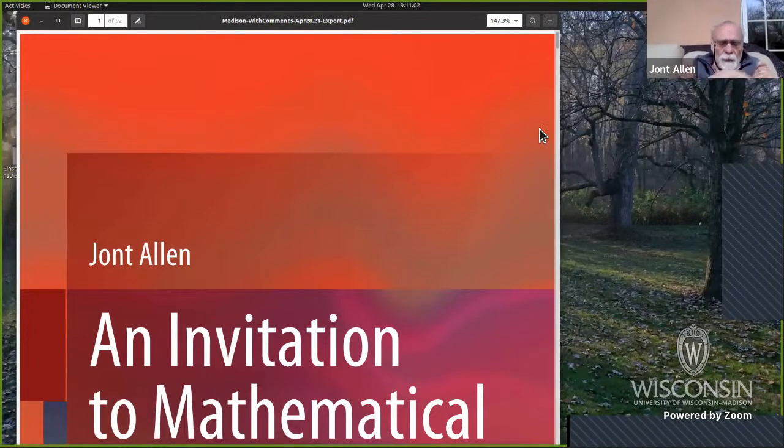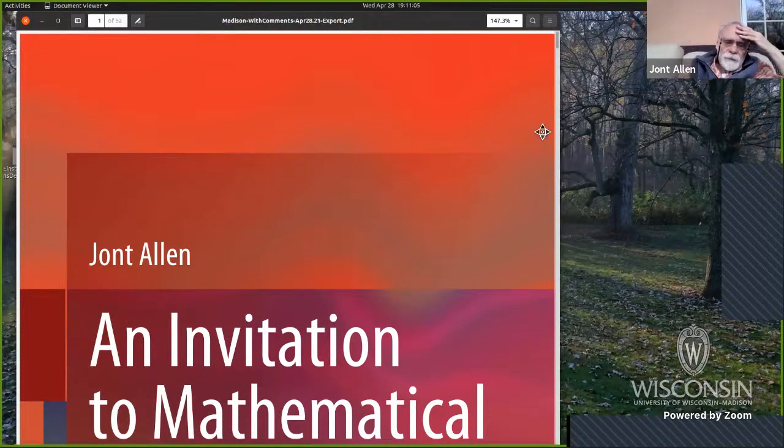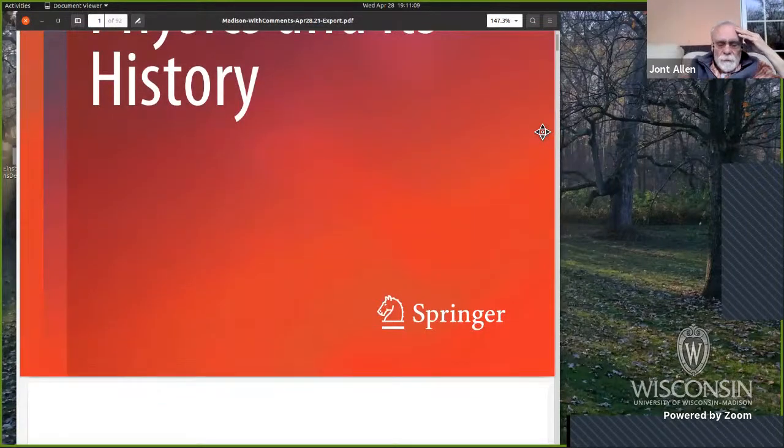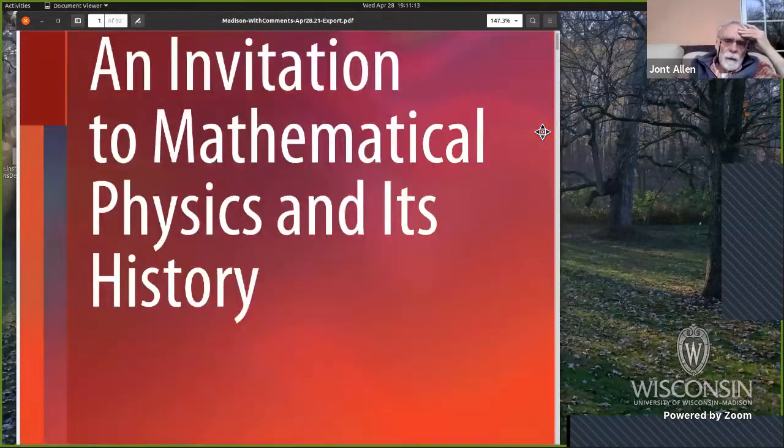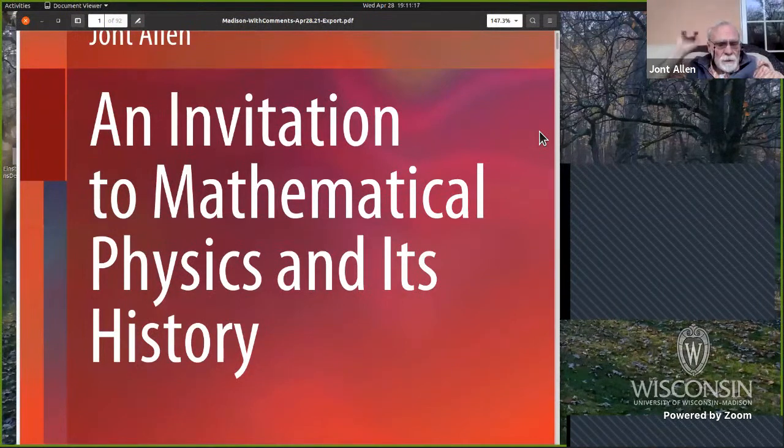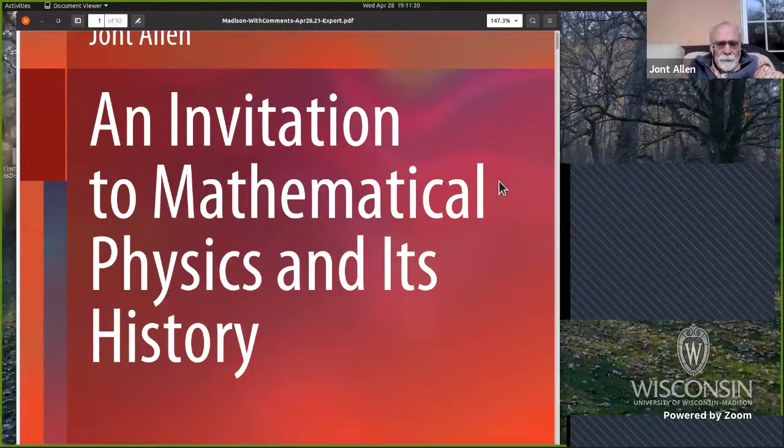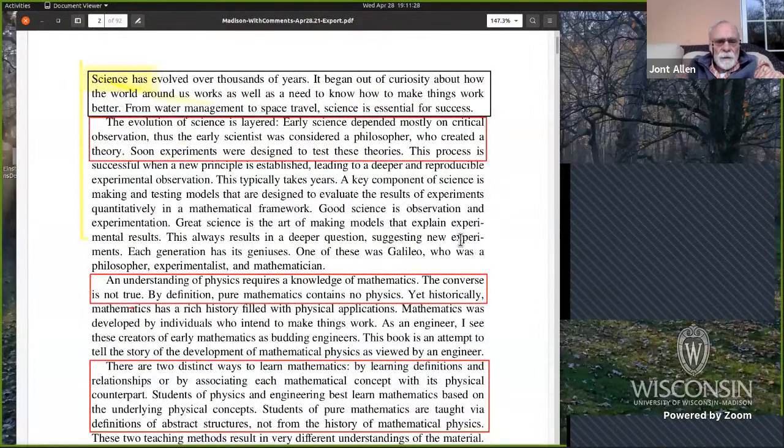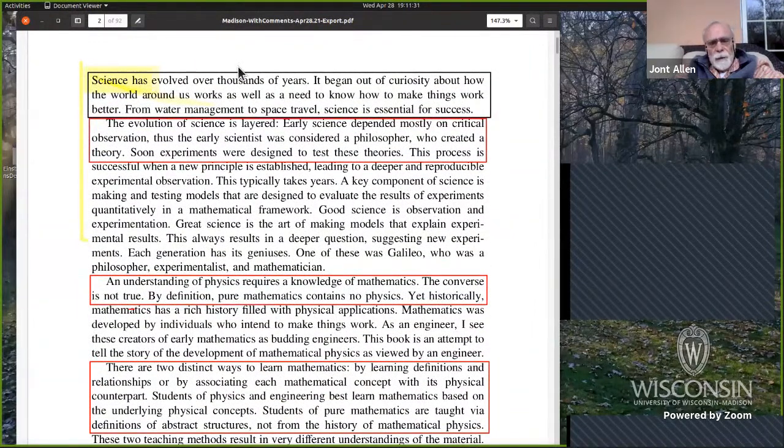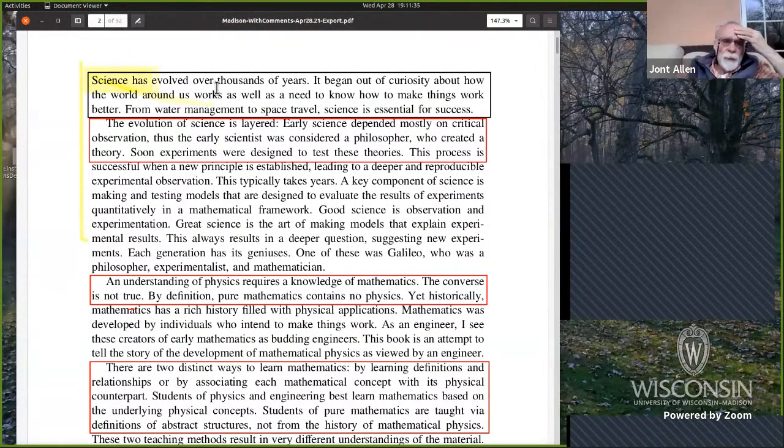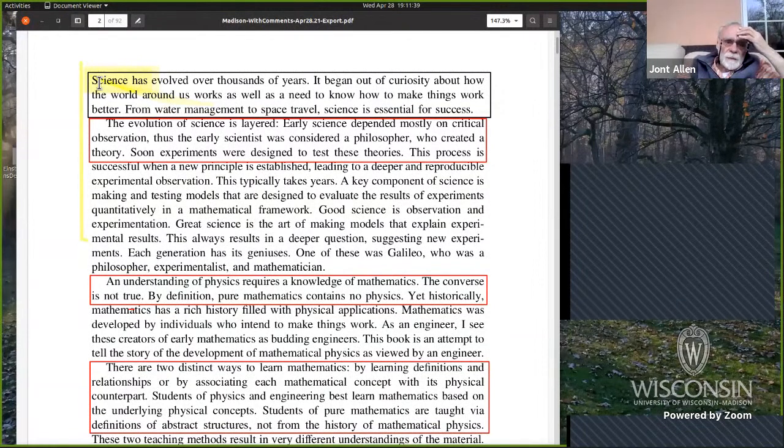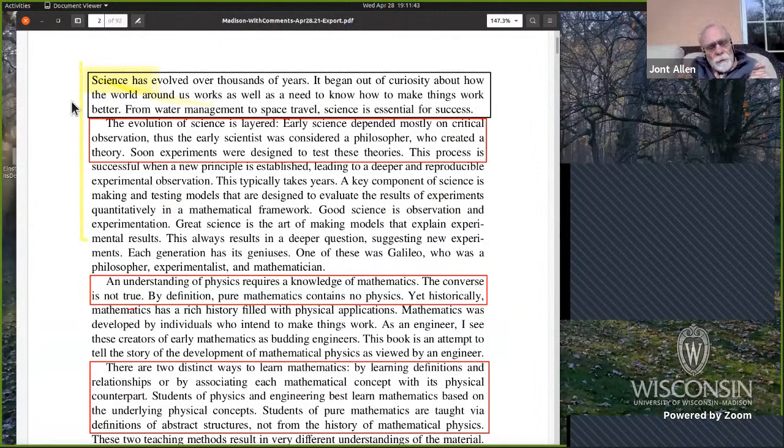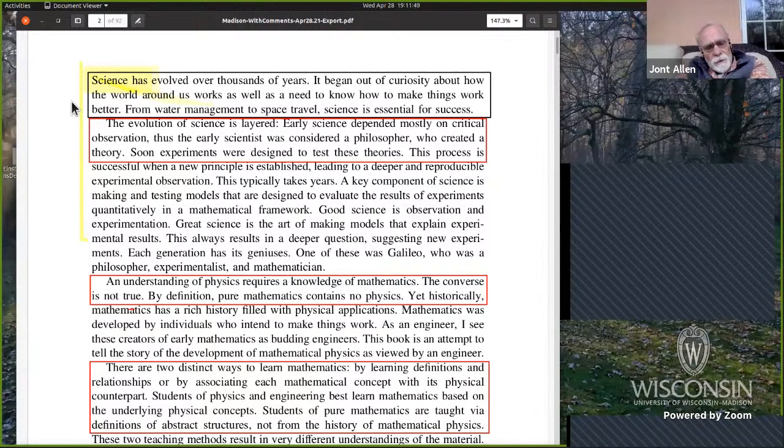So it's had 1500 downloads or something like that. Springer lets me know how it's going. So it's a textbook on mathematical physics, but it's kind of sold to people as a math book. This is the introduction. I skip around a lot through the book. Feel free to ask questions at any time.